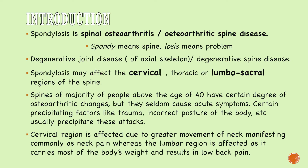Above 40 years of age, osteoarthritic changes in the spine start happening in almost all people. But only those who are exposed to risk factors or precipitating factors — like trauma, incorrect posture, or certain job habits — develop acute symptoms because of these osteoarthritic changes in the spine.